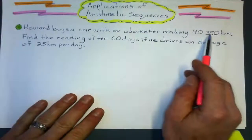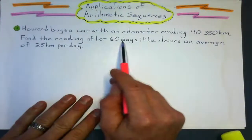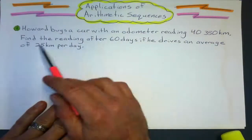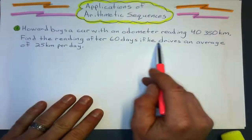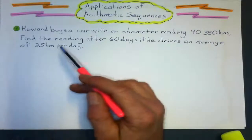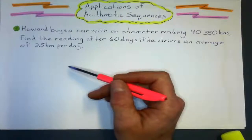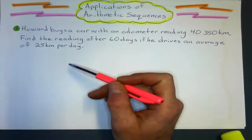Okay, so let's take a look at this one. So we buy the car. Here's the initial reading. After 60 days, he wants to find the reading after 60 days if he drives an average of 25 kilometers per day. So we have to ask ourselves, is this a sum problem or is it I want to find the value of a certain term problem?